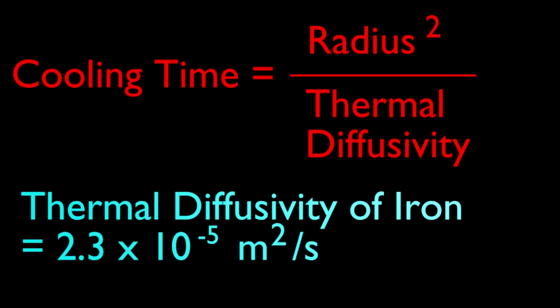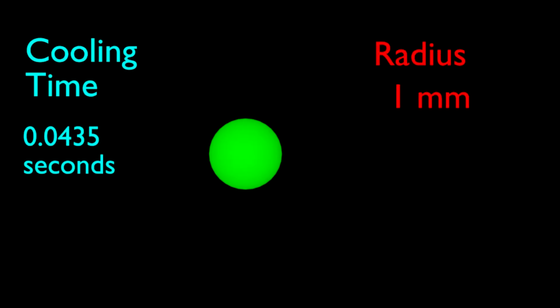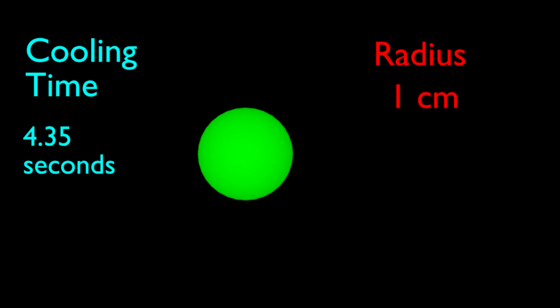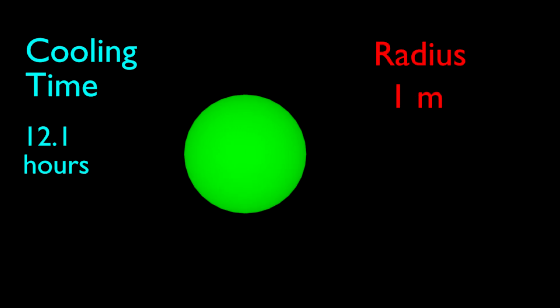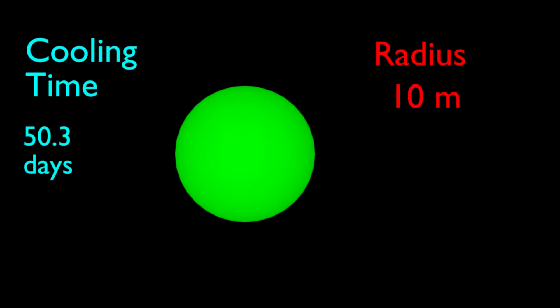Take a ball of iron, for example. Iron has a thermal diffusivity of 2.3 times 10 to the negative 5 square meters per second. So a ball of iron with a radius of 1 millimeter will take about 0.04 seconds to cool. Increase the radius to a centimeter and a ball of iron will take about 4 seconds to cool. Increase the radius to a meter and the ball of iron will take about half a day to cool.